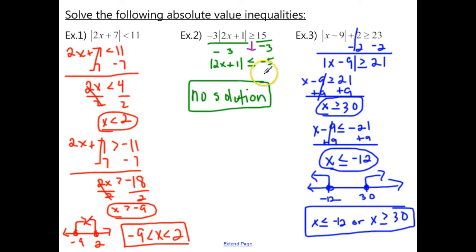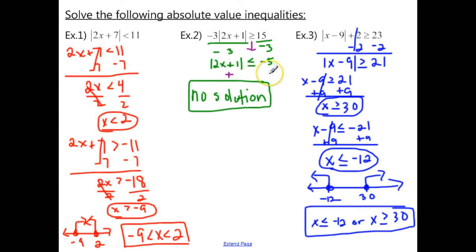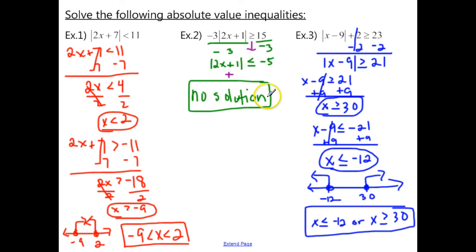Before we proceed breaking this into two different inequalities, think with me for a second. When you take the absolute value of a number, you always end up with a positive number — absolute values are always positive. Is it possible for that positive number to be less than or equal to negative 5? No, that's impossible. There are no positive numbers less than negative 5. So because this is an impossible situation, your answer is no solution. You could split this into two inequalities and work through it, but your answer wouldn't make sense because this is already an impossible problem.